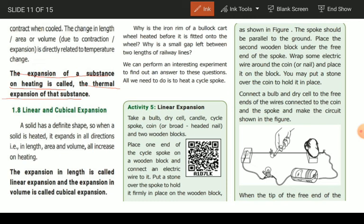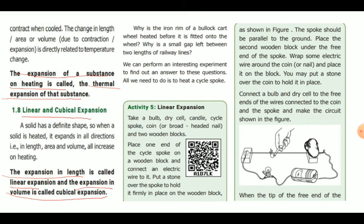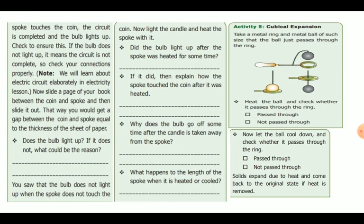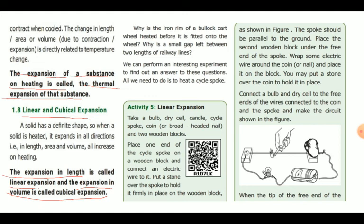So, the expansion of a substance on heating is called thermal expansion. The expansion of length is called linear expansion, and the expansion of volume is called cubical expansion. This is the main topic of activities 5 and 6, but we will skip this activity. Linear and cubical expansion relate to length and volume.